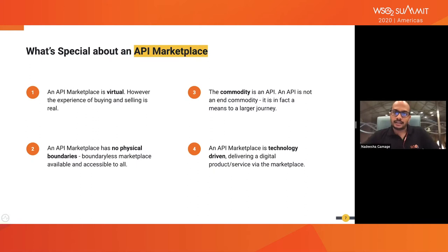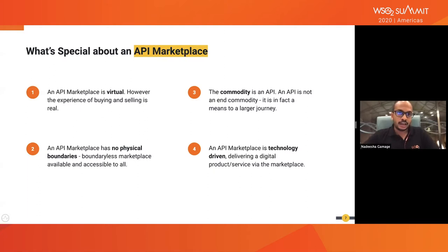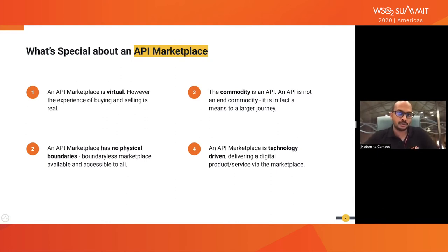The third difference is that the commodity sold or shared is an API, and an API is not the end commodity. If you go to a traditional marketplace, you might buy certain vegetables, which is the end product. But when it comes to an API, you subscribe to an API but you are not the ultimate consumer. You use that API to embed it within your application, so your customers will be the final consumer. It's basically a means to a larger journey.